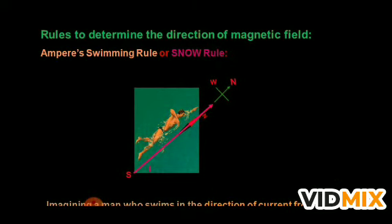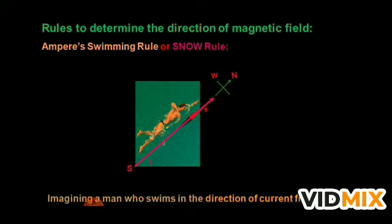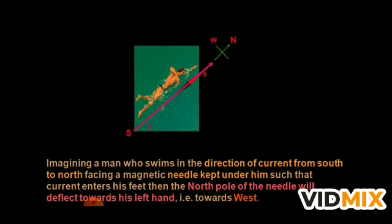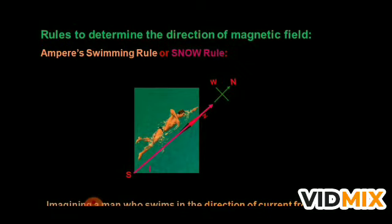So this is the W in SNOW — West. Whenever the current is flowing from South to North, the North pole of the magnetic field will deflect towards the West. That is what the W in SNOW stands for.